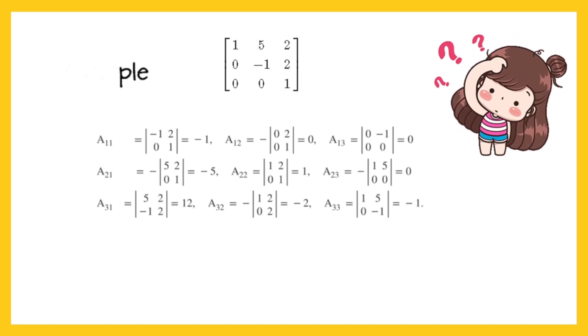Since A is an upper triangular matrix, the determinant of A is the product of its diagonal entries. Thus we have determinant A equals minus 1, which is a non-zero value and hence A is invertible.